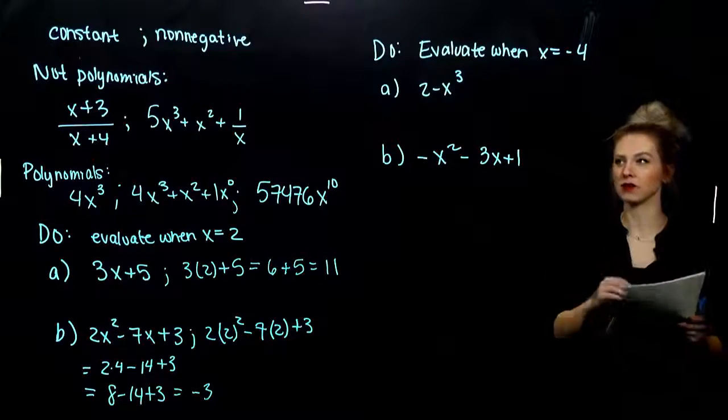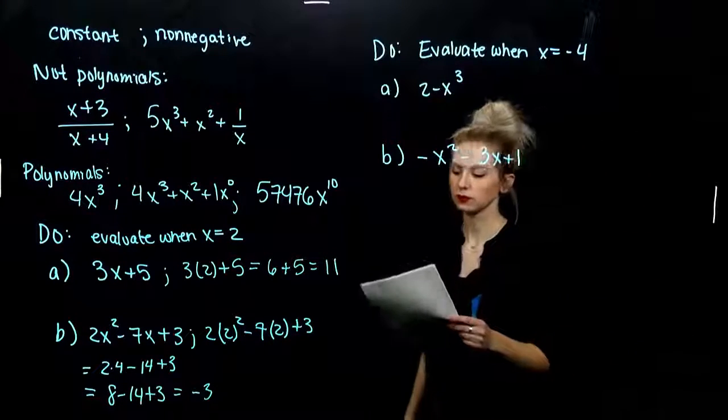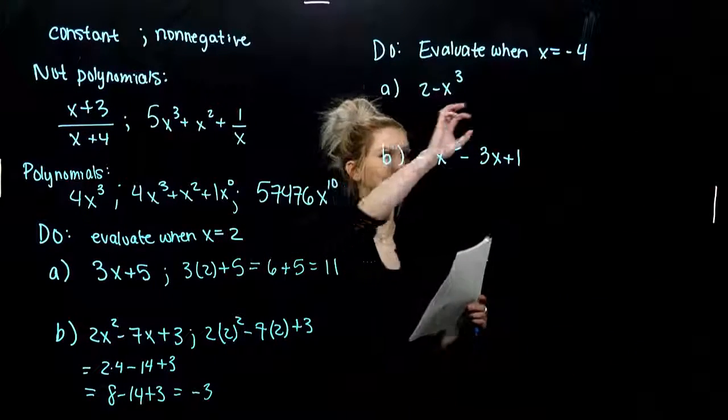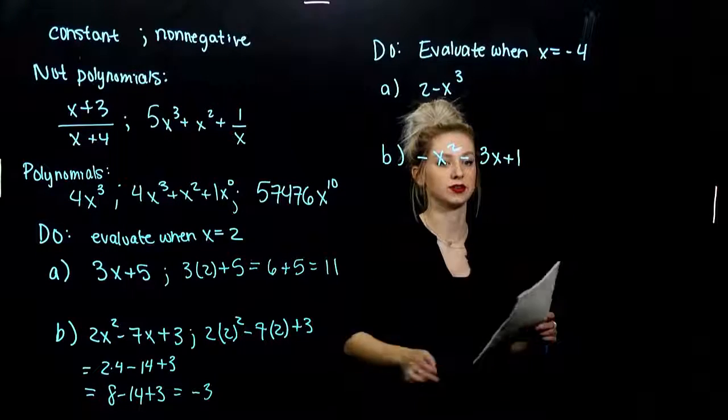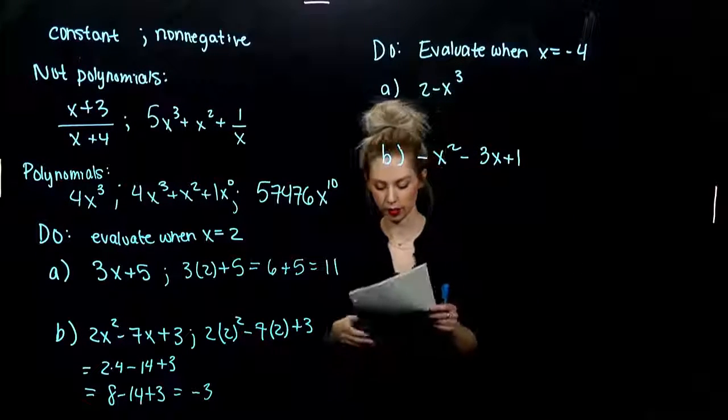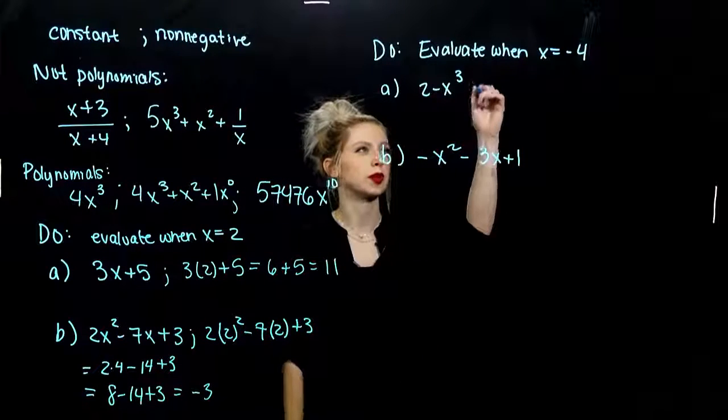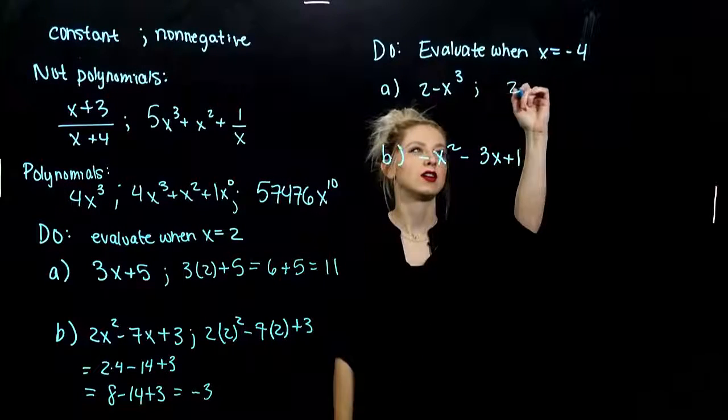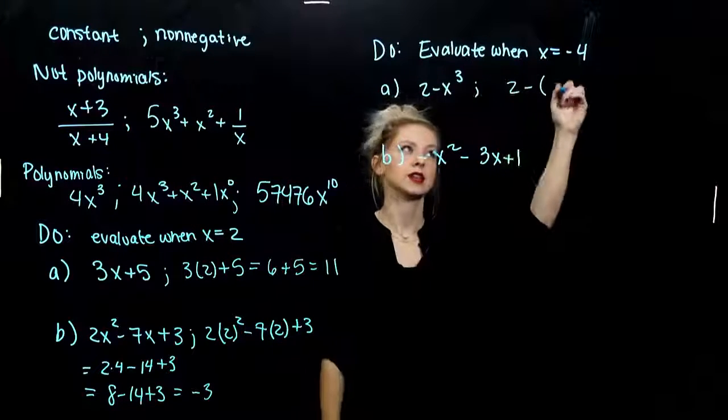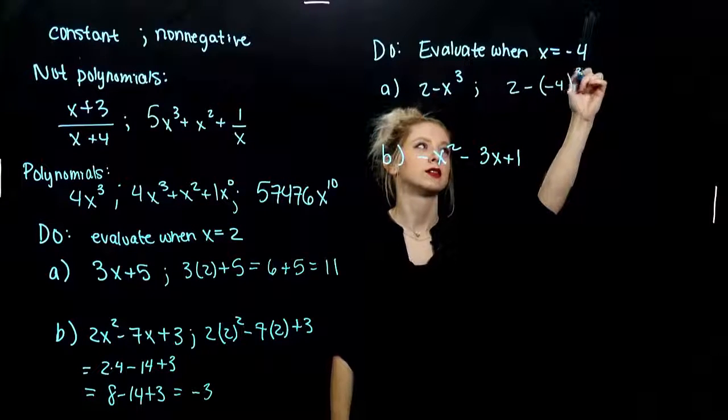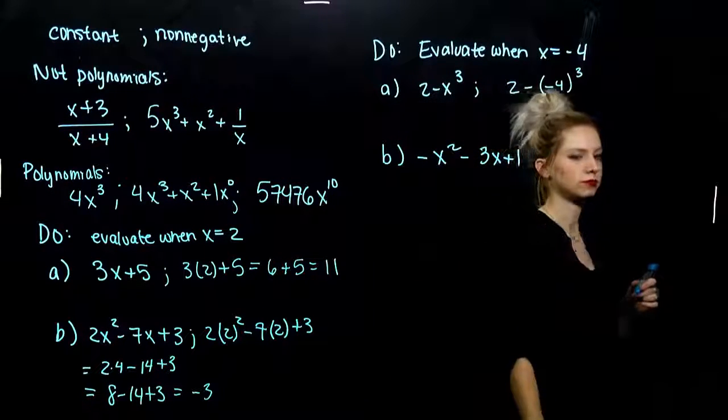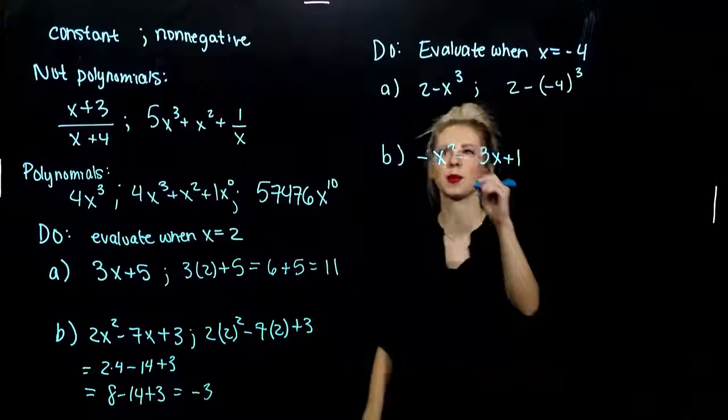And, I want to go ahead and throw a negative in there as well for our variable, where we're evaluating, because that will make a huge difference. Parentheses are really important with polynomials. So, let's go ahead and evaluate this first polynomial at negative 4. Wherever I see an x, I'm putting parentheses, so I don't make a mistake.